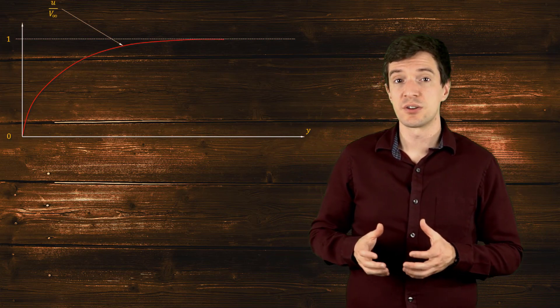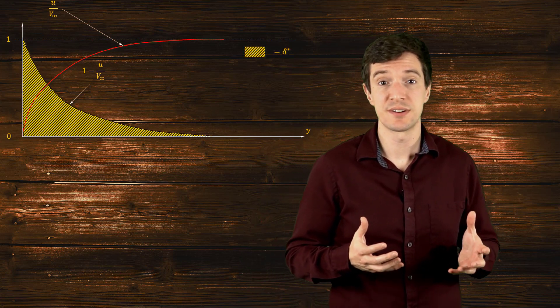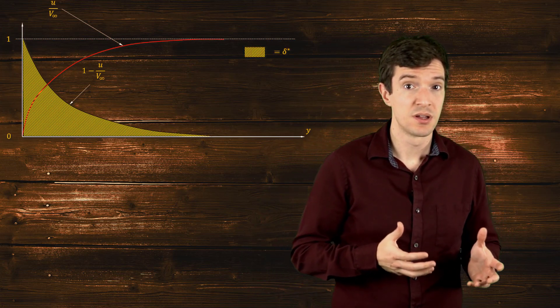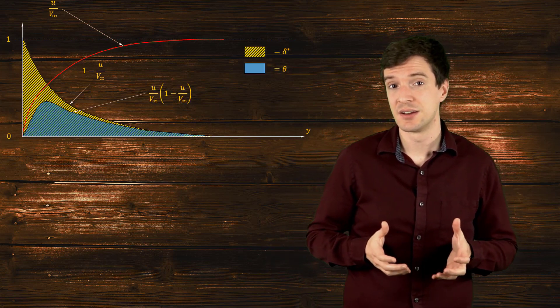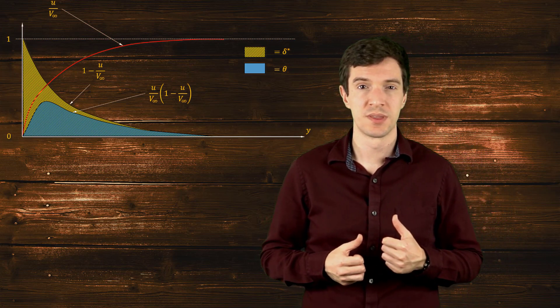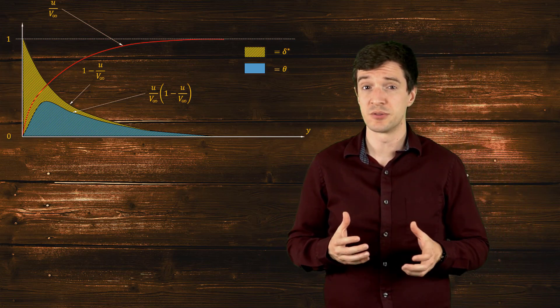While for a generic shape the momentum thickness is not. We can now analyze how the different terms behave in the boundary layer along the y direction. The first term, U over U infinity, changes and grows gradually from 0 to 1. The displacement thickness presents a mirrored trend compared to the previous term, going from 1 to 0. The momentum thickness instead initially grows and then goes back to 0. And as you can see, the displacement thickness is always larger than the momentum thickness.